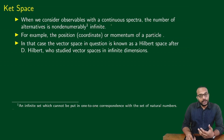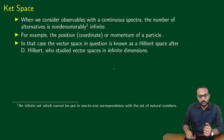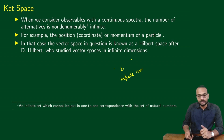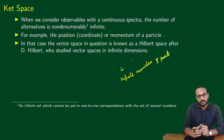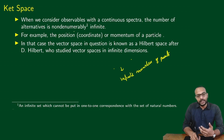Now we can consider observables with a continuous spectrum, and in that case the number of alternatives is non-denumerably infinite. For example, if you are looking at the position of a particle in space — if you are measuring the position of that particle — we will see that even between any two points in space, there are an infinite number of points. So we say that the spectrum of possible measurement outcomes for position is infinite, and it is also non-denumerably infinite.